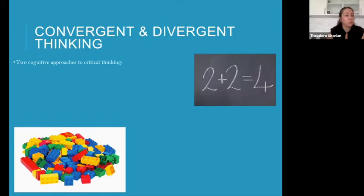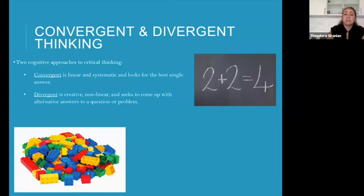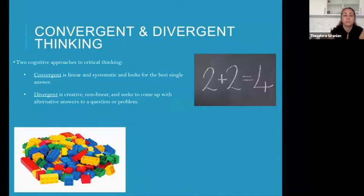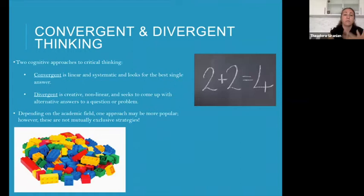What is convergent and divergent thinking? There are two cognitive approaches to critical thinking. Convergent is linear and systematic — it looks for a single best answer. An example is a simple math equation: two plus two equals four. Another example would be a multiple choice question on a standardized test, where you're given three to four answers and need to choose the best single answer. Divergent thinking is different — it's creative and nonlinear. It seeks to come up with alternative answers to a question or problem. If I gave everybody a pile of Lego blocks, even if I gave you the exact same blocks, invariably many of you would come up with a multitude of different structures. Depending on the academic field, one approach may be more popular, but they're not mutually exclusive and often people benefit from using them in tandem.